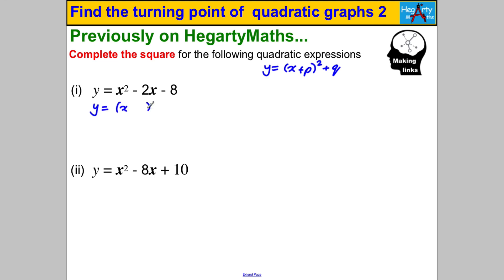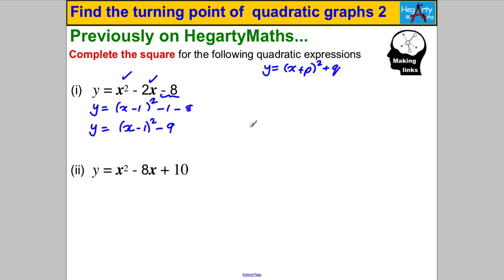So how did we do these ones? Well, let's write y equals — we know it's of the form (x + something)². We half the number negative 2 to get negative 1. Expanding in our head gives x² − 2x + 1, so we take that 1 off and don't forget to subtract that 8 as well. That tidies up to y = (x − 1)² − 9, where P is negative 1 and Q is negative 9.